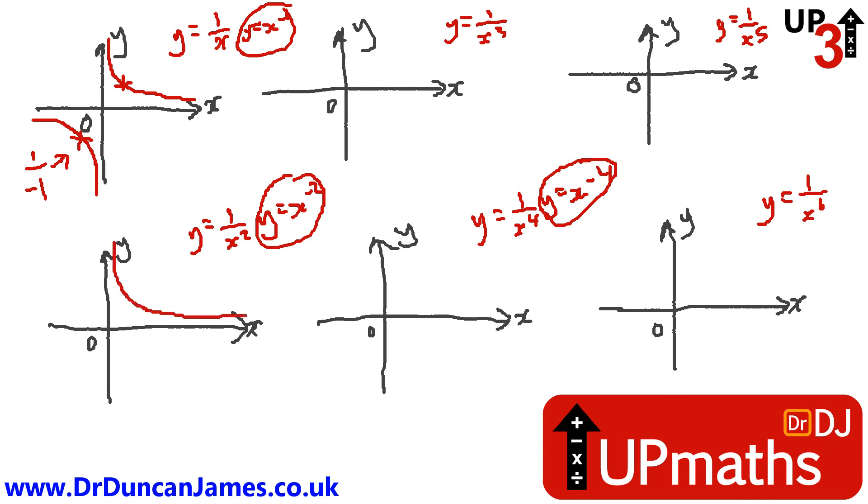Next one, y equals 1 over x squared. That one looks like this. Similar arguments will make the graph look the same as 1 over x, except when x is negative.